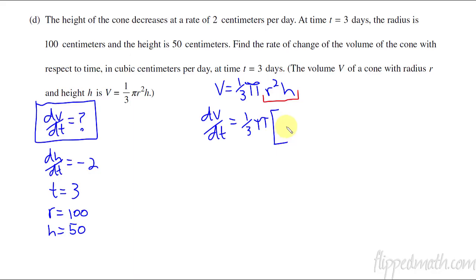This is what we're trying to solve for. This is going to equal 1/3 π. I have my 2. What's my r? r was 100. What's my dr/dt? Uh-oh there is no dr/dt. So what am I supposed to put there? Well I know that at time t equals 3, dr/dt, look at this, it's right here.